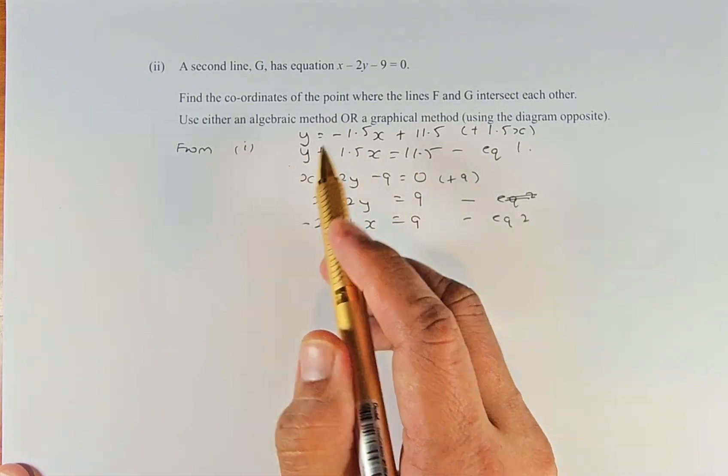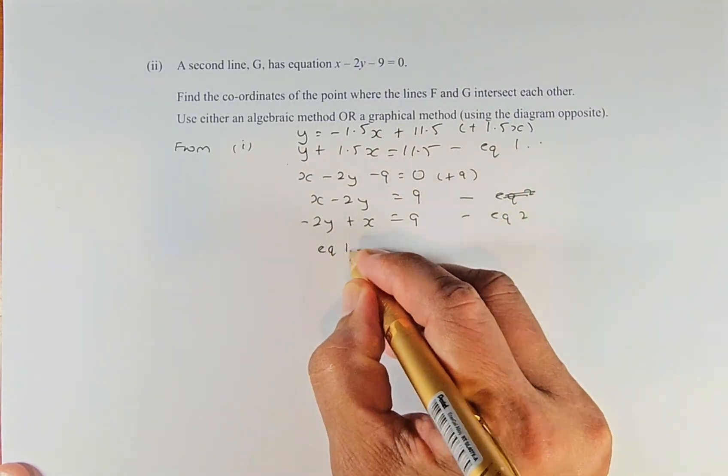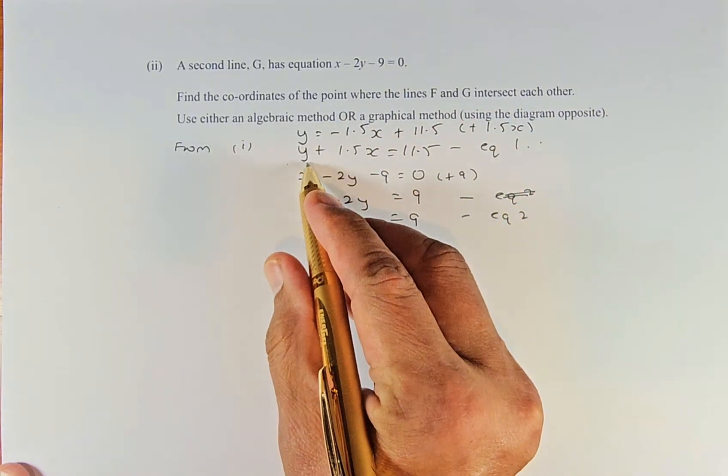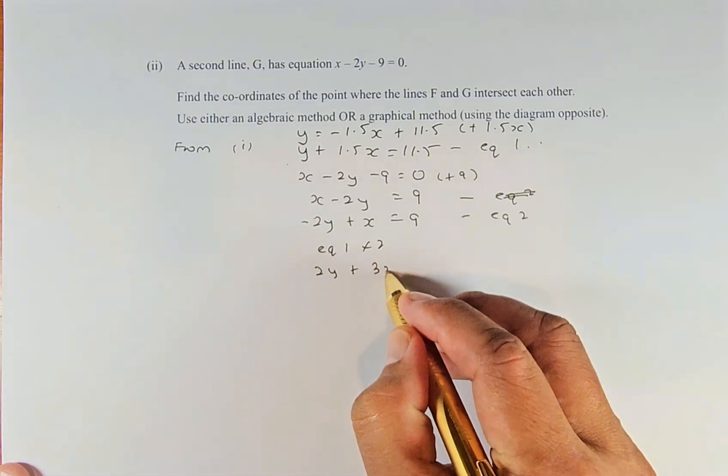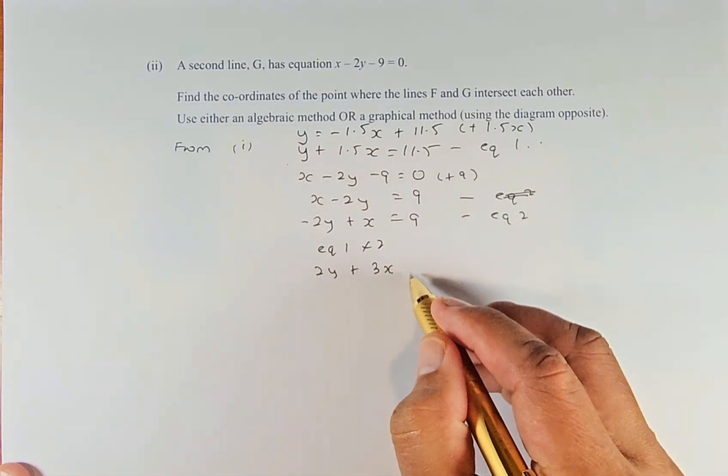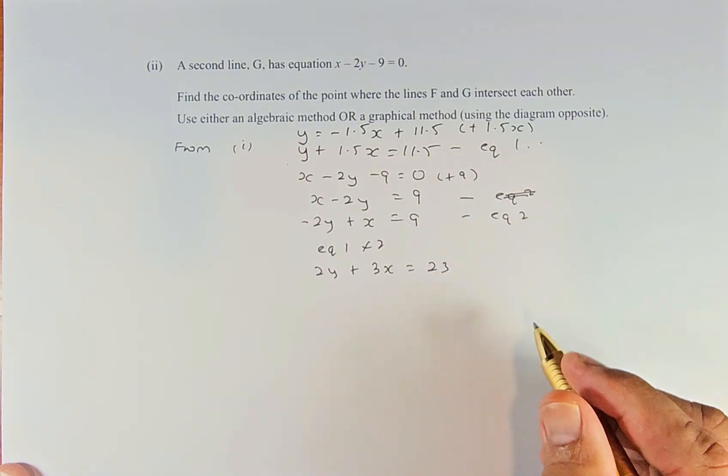To get 2, we multiply equation 1 by 2. That equation becomes 2y + 3x = 23, because 1.5 times 2 is 3, and 11.5 times 2 is 23. We label that as equation 3.